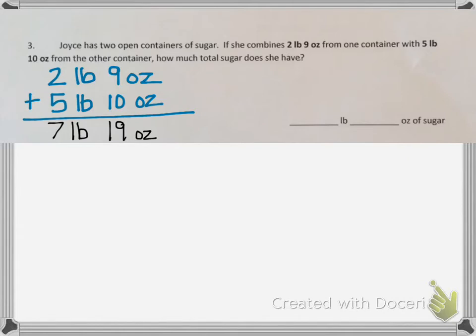Now what we have to notice here is that 19 ounces is more than 1 pound. Since there are 16 ounces in a pound, 19 ounces is equivalent to 1 pound and 3 ounces.